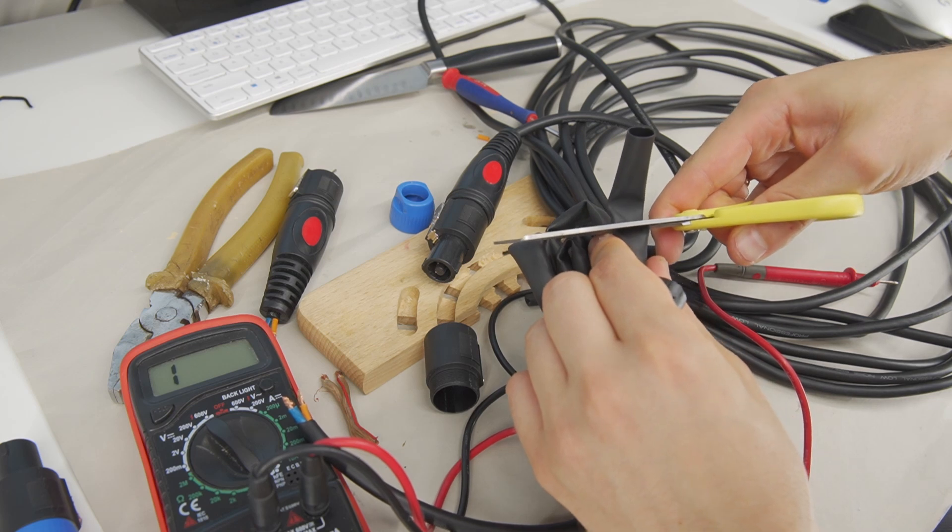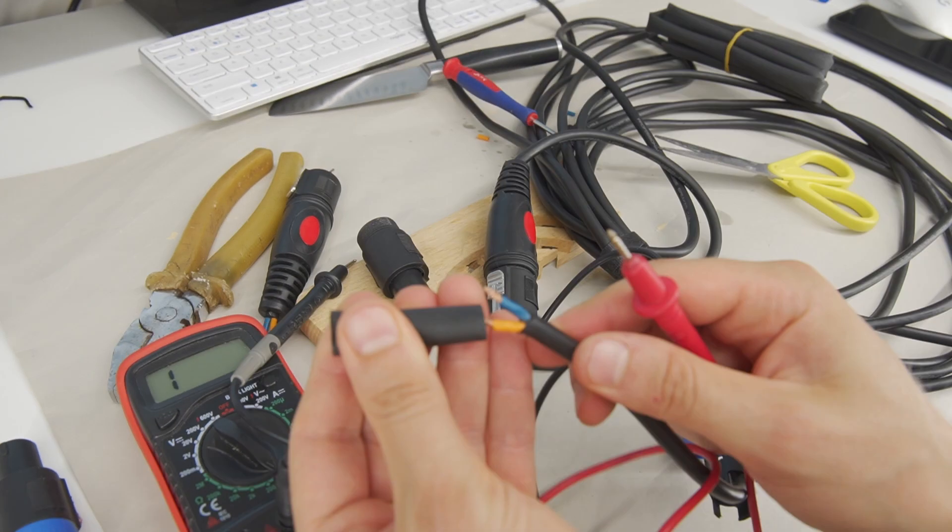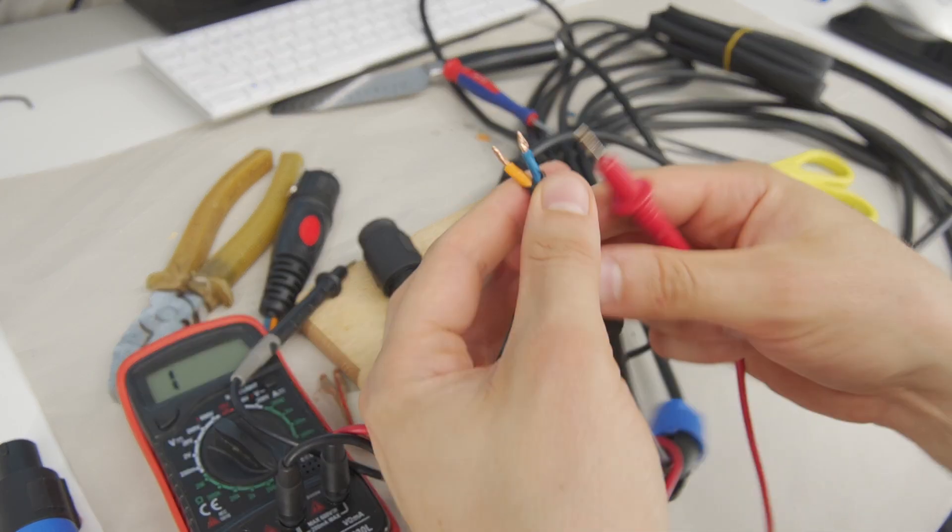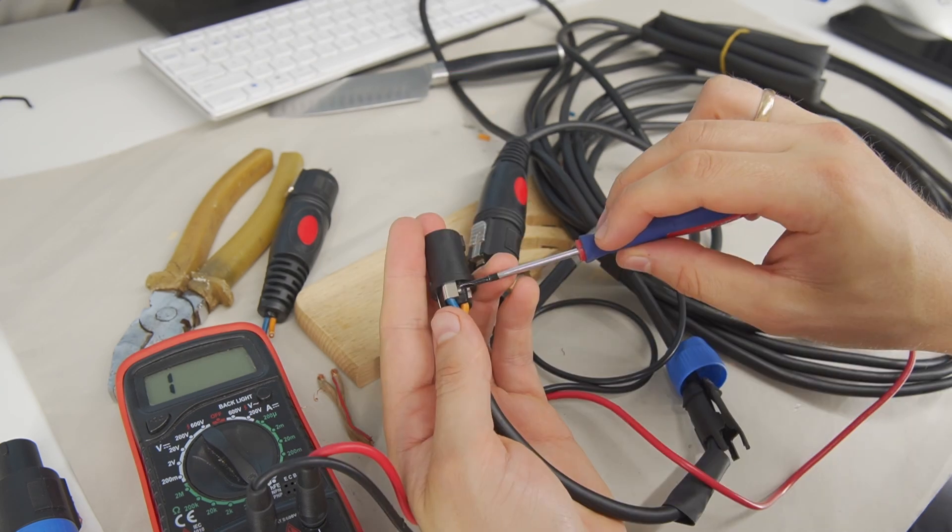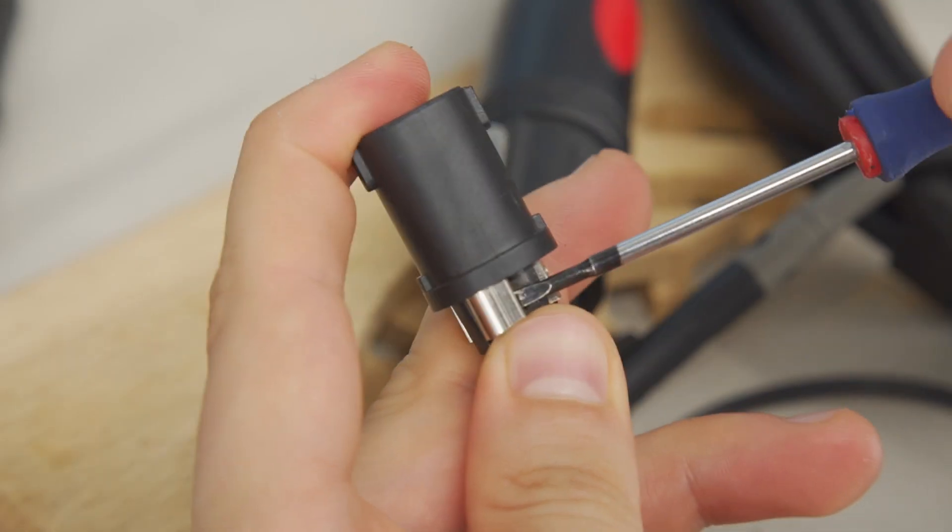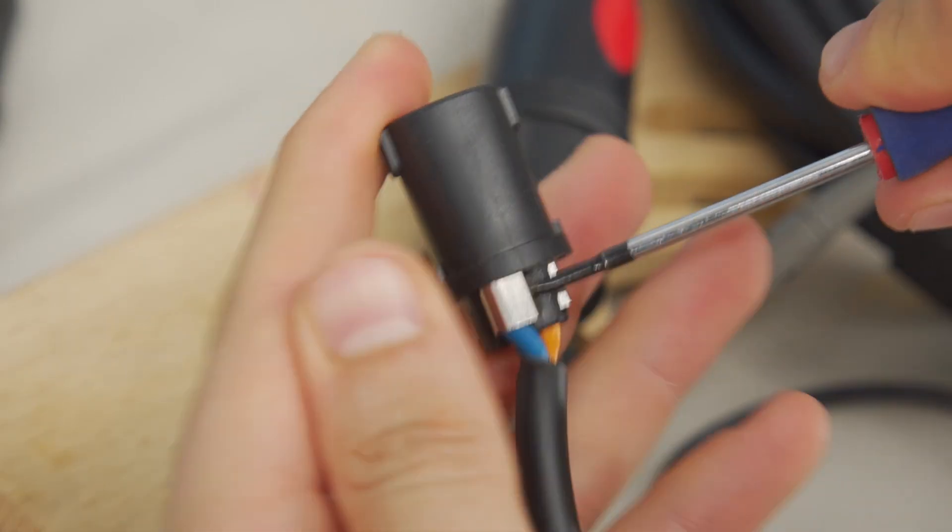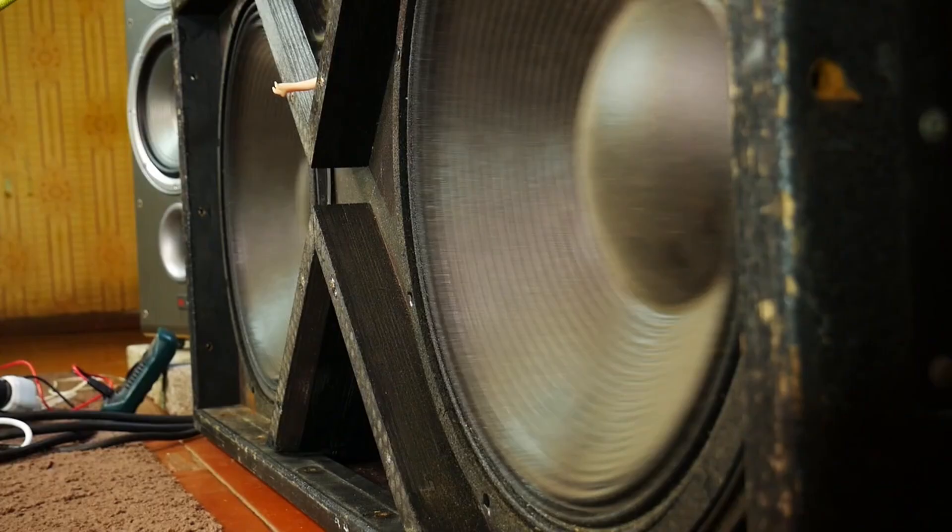Cut heat shrink tubing with hot glue inside. This helps hold the cable in place for long term. Insert the wires into the contacts, making sure the polarity is correct on both ends of the cable. Otherwise, the speakers will be out of phase and sound bad.